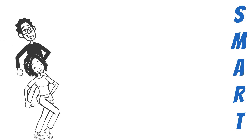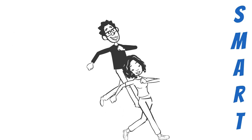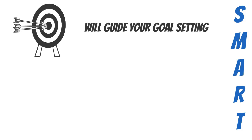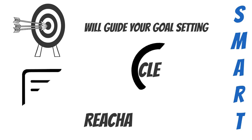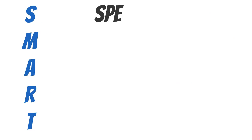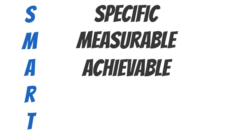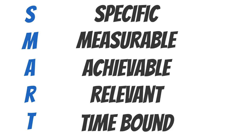SMART goals are meant to guide you towards self-improvement in a way that keeps you motivated. But what are SMART goals? SMART is an acronym that you can use to guide your goal setting. To make sure your goals are clear and reachable, each one should be specific, measurable, achievable, relevant, and time-bound.